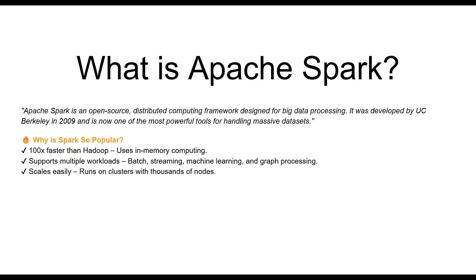Apache Spark supports multiple workloads such as batch, streaming, machine learning, and graph processing. You can scale it very easily — it runs on clusters with thousands of nodes. You can install it on your own premises with multiple nodes, or you can use cloud providers. We are going to use a service from Azure — Databricks on Azure — which lets us create a workspace where we can write code in notebooks, create clusters, and define the number of nodes we'd like to use.